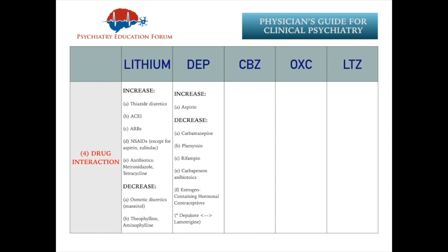Moving forward to the next medication: carbamazepine. Medications that can increase the level of carbamazepine include antidepressants including fluoxetine, fluvoxamine, and trazodone. Then cimetidine can increase the levels. Olanzapine carries the risk. And among antibiotics, ciprofloxacin, macrolides, erythromycin, and azoles can increase that level.